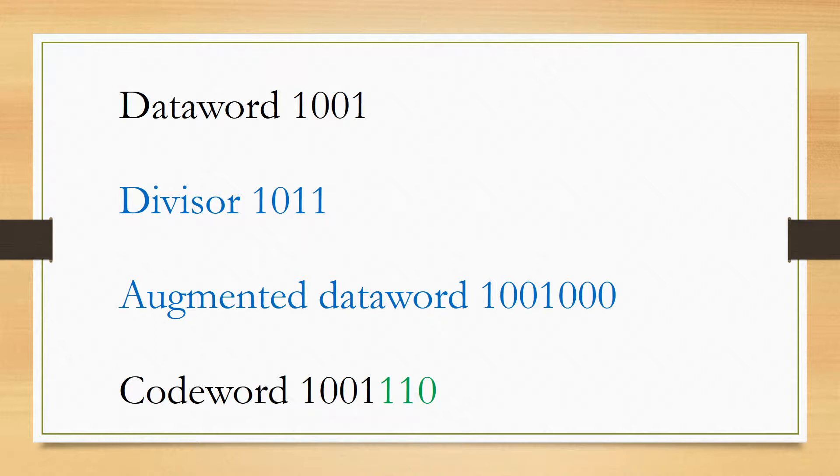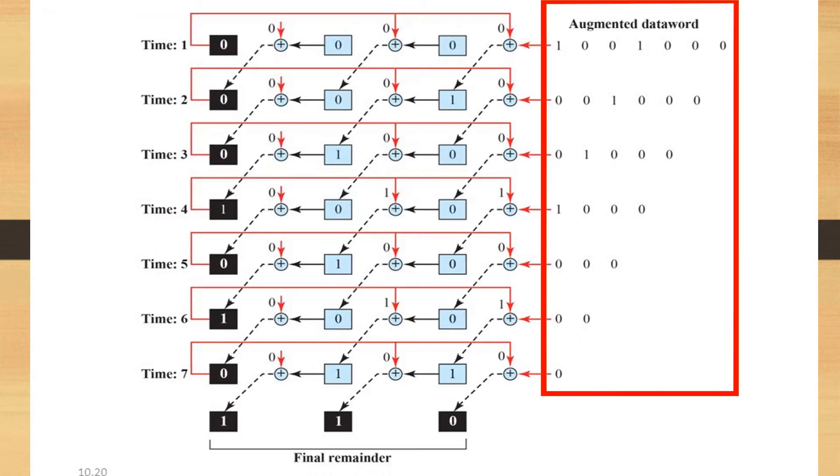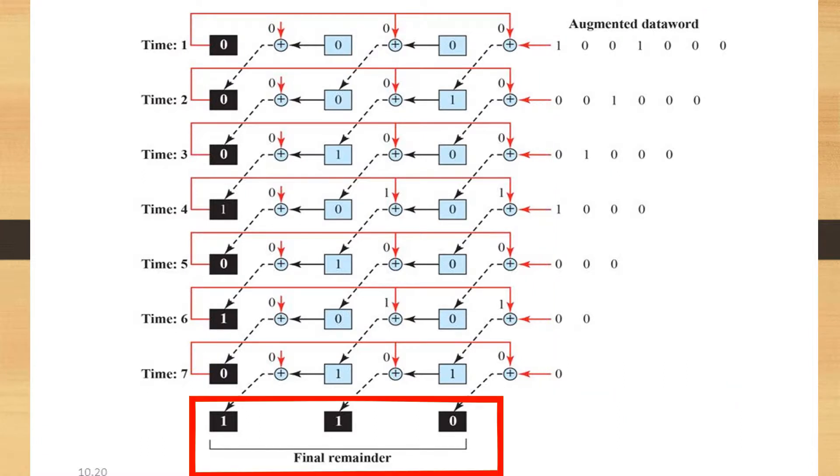The codeword will be generated after putting these two numbers into the CRC encoder. This is the simulation of division in the CRC encoder. The left side is the timeline, right side is the augmented dataword. We can finally get a remainder from the lower side.